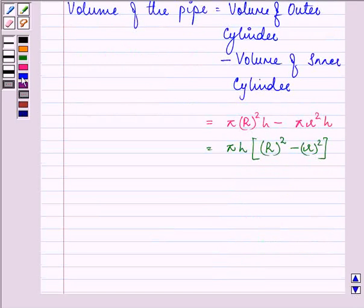Now, let us substitute their values. We have it as 22 by 7 into H which is given to us as 35 in the bracket.